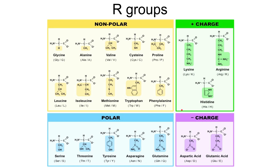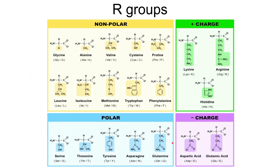There are 20 different types of amino acids found naturally within organisms. You do not need to name any of them or know their R groups, but it is useful to know the different properties of some R groups. Some are uncharged, some are non-polar, and the remaining have some form of charge — polar R groups have partial charges, while ionic R groups are either positively or negatively charged. This becomes important when we look at the tertiary structure of a protein.